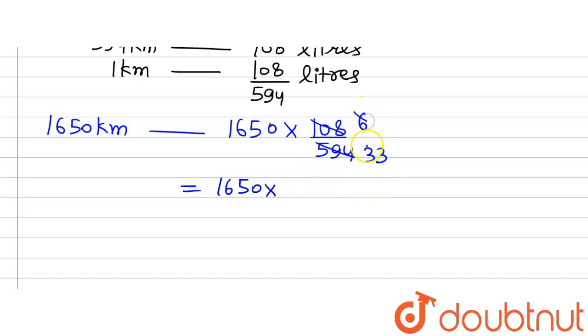Now again, dividing by 3: 3 multiplied by 2 gives us 6, and 3 multiplied by 11 gives us 33. So we get 1650 multiplied by 2 divided by 11.